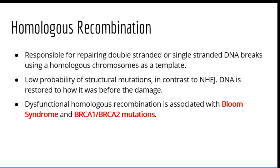Now we will talk about homologous recombination. While the other repair mechanisms fix problems with nitrogenous bases or nucleotides, homologous recombination fixes breaks in the DNA strand. When it comes to repairing DNA breaks, there are two mechanisms — one more effective than the other: homologous recombination and non-homologous end-joining. Homologous recombination is considered more effective because it always restores DNA to the correct configuration — how it was before the damage — by using the homologous chromosome as a template.